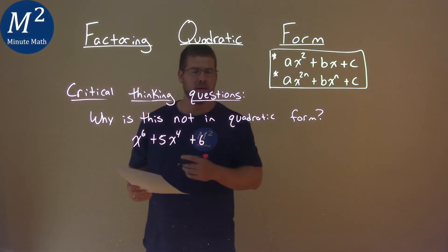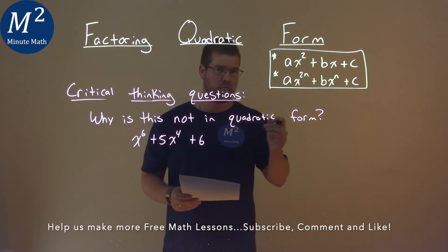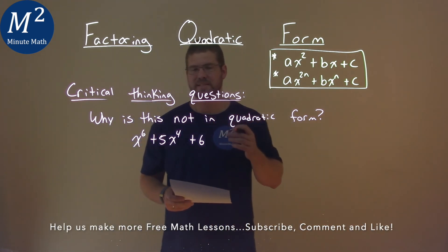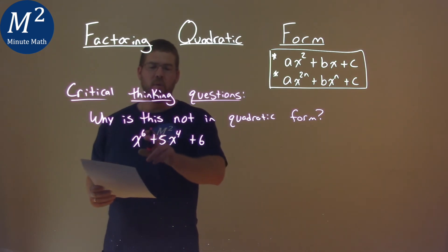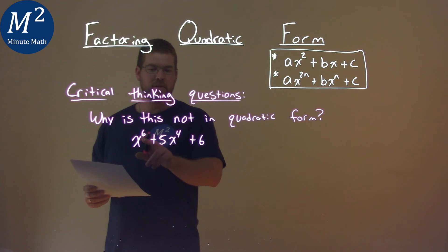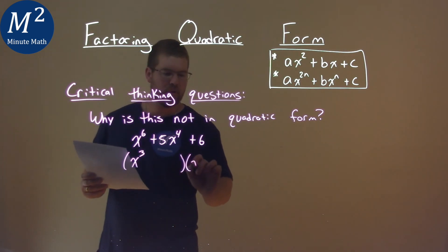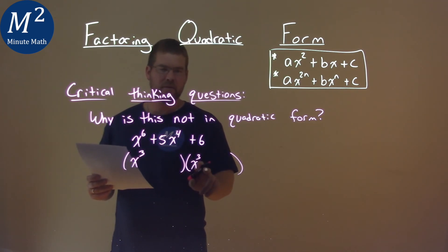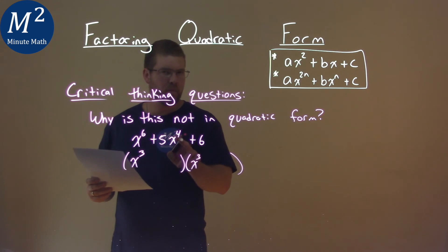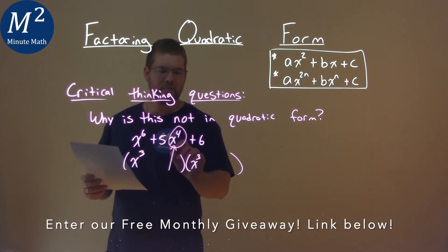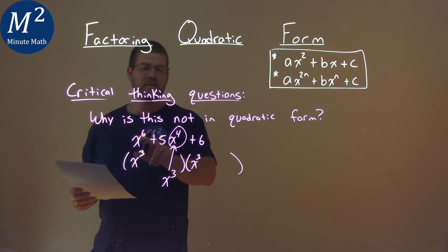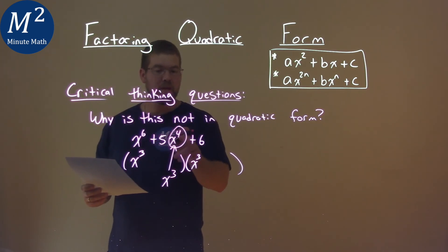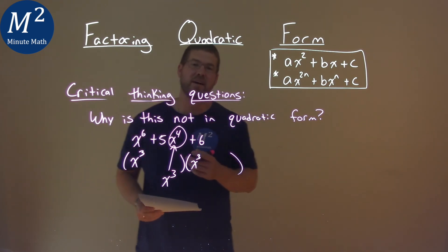We're given this critical thinking question: why is this not in quadratic form? x to the sixth plus 5x to the fourth plus 6. The main reason is look at the exponents — the 6 and the 4. If we broke this down, we would have to find two x values: x to the third times x to the third gets us the sixth. But when we add them together, we wouldn't get a 4 — it wouldn't really work. This value here, x to the fourth, would have to be x to the third to fit our quadratic form. Generally, we take the highest exponent and if we divide it by 2, that should be the middle exponent. In that case, 6 divided by 2 is 3. That is the reason why this is not in quadratic form.